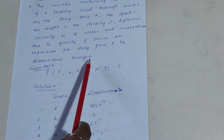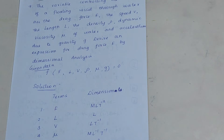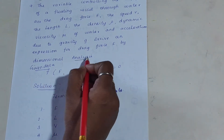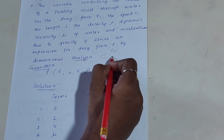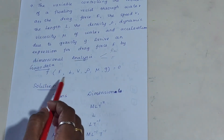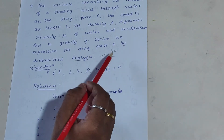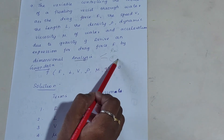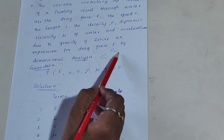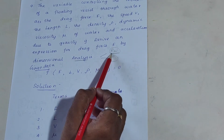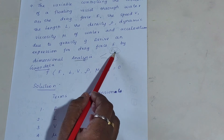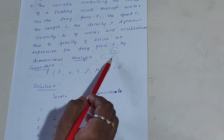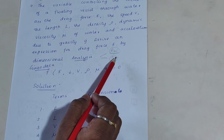One thing to be very clear: they didn't mention which method to use, so you can use either Rayleigh's method or Buckingham's Pi theorem. If the number of variables is greater than 4, you have to go for Buckingham's Pi theorem; if it is less than 4 variables, you choose Rayleigh's method. When compared to Rayleigh's method, Buckingham's Pi theorem is generally easier.